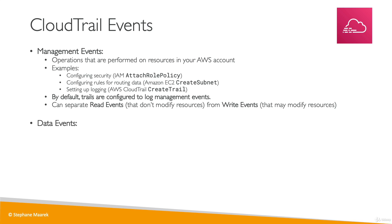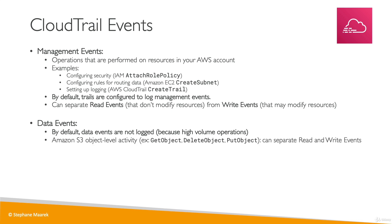Data events are separate and are not logged by default because they are high-volume operations. Examples include Amazon S3 object-level activity such as GetObject, DeleteObject, and PutObject — these can happen very frequently on an S3 bucket. You can also separate read and write events here: GetObject is a read event, while DeleteObject or PutObject are write events. Another data event type is AWS Lambda function execution activity via the Invoke API, which can be very high volume if your Lambda functions run frequently.